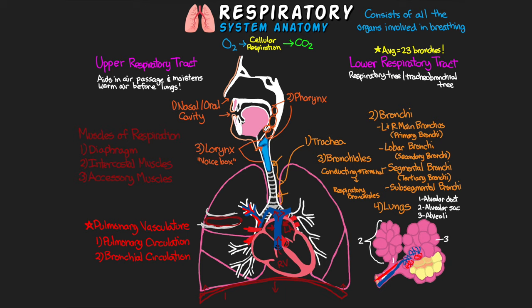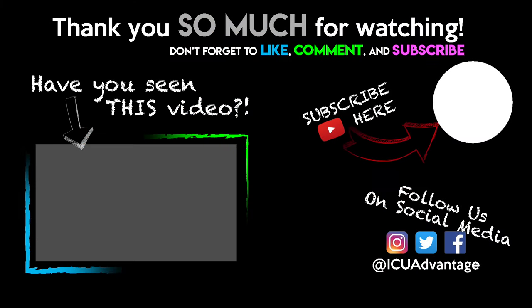That covers our respiratory system. Hopefully this was a good in-depth explanation of all the different parts and components that play a vital role in our respiratory system. If you liked this lesson, please leave a like and subscribe to the channel and ring the bell to be notified when new lessons are available. We also have a Patreon page for ICU Advantage and you can find us on Instagram and Facebook as well. Thank you so much for watching — have a wonderful day.